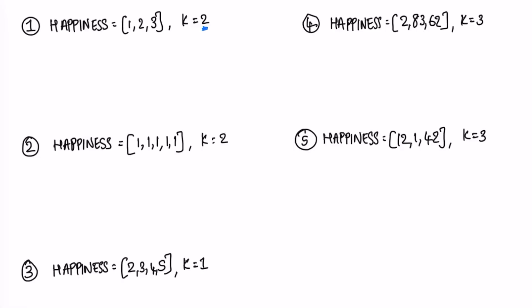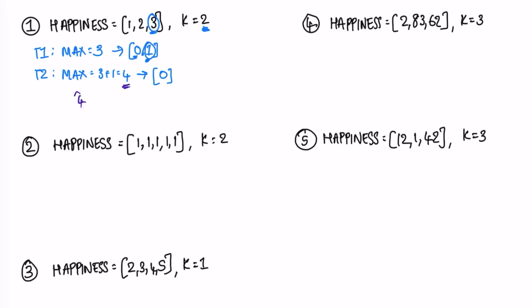We have to perform two turns. In turn 1, I pick the maximum value which is 3. Because I picked this, the rest of the numbers are decremented by one: 1 becomes 0 and 2 becomes 1. In turn 2, I pick the new maximum which is 1, and 3 plus 1 equals 4. The remaining value would go to -1 but since it can't be negative it becomes 0. After two turns, the maximum value is 4, so 4 is the output.